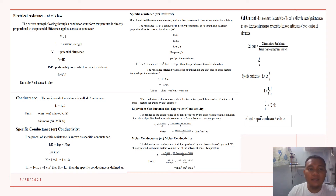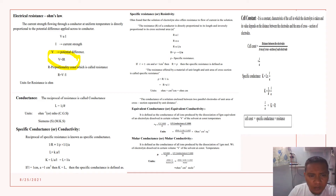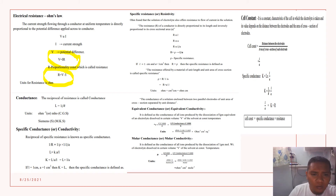Next, we have some formulas for you to understand electrochemistry. We have electrical resistance, or Ohm's Law. Just remember: voltage is equal to IR, where I is current and R is resistance. You can rearrange to get R is equal to voltage over I, or amperes, or current. The unit for resistance is ohms.